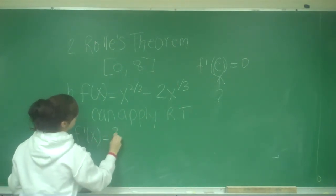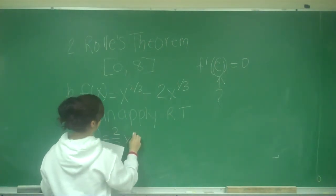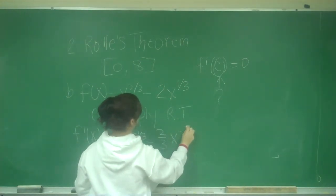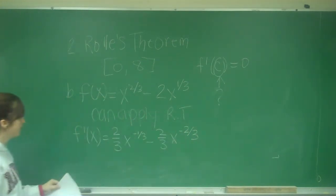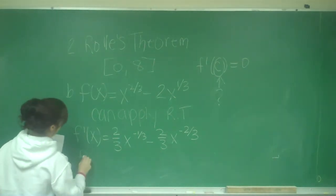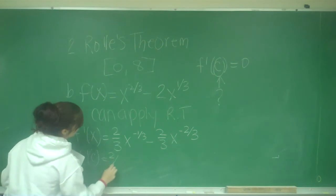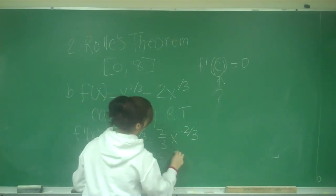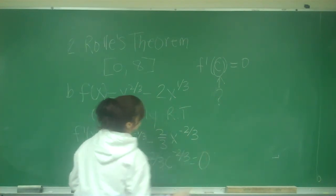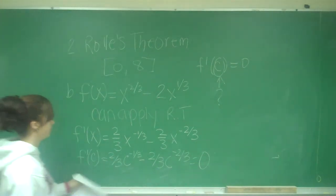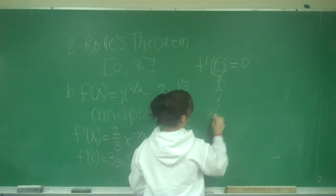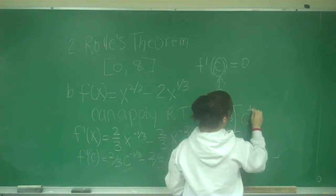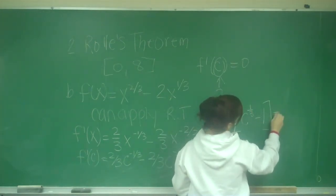So f prime of x would be 2 thirds x to the negative 1 third minus 2 thirds x to the negative 2 thirds. So now I'm just going to plug a c in when I see x. So f prime of c equals 2 thirds c to the negative 1 third minus 2 thirds c to the negative 2 thirds, and that's equal to 0. So now I just need to solve for c. So I'm going to factor out 2 thirds c to the negative 2 thirds, which is the smallest exponent. And I'm left with c to the 1 third minus 1 equals 0.